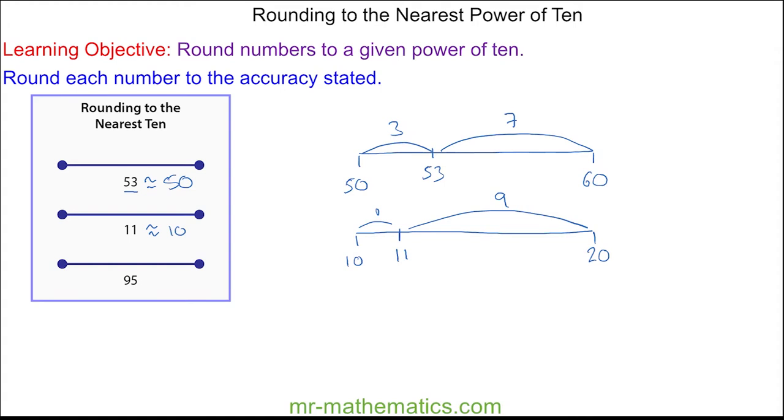And for 95, well 95 is between 90 and 100. And it is exactly halfway between the two, which is 5 from 90 and 5 from 100. And because it is halfway we choose to round it up to 100.